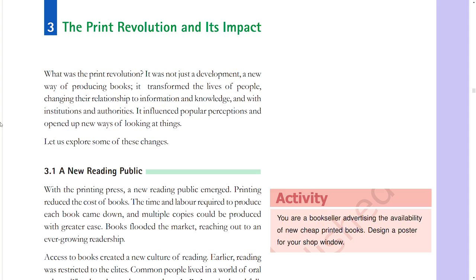Section 3: The Print Revolution and Its Impact. What was the print revolution? It was not just a development — a new way of producing books. It transformed the lives of people, changing their relationship to information, knowledge, institutions, and authorities. It influenced popular perceptions and opened up new ways of looking at things.